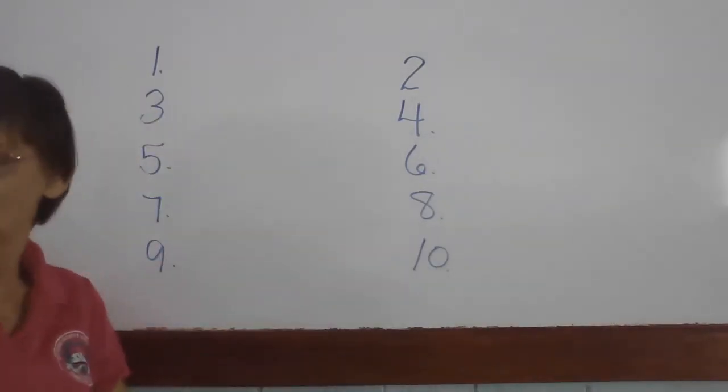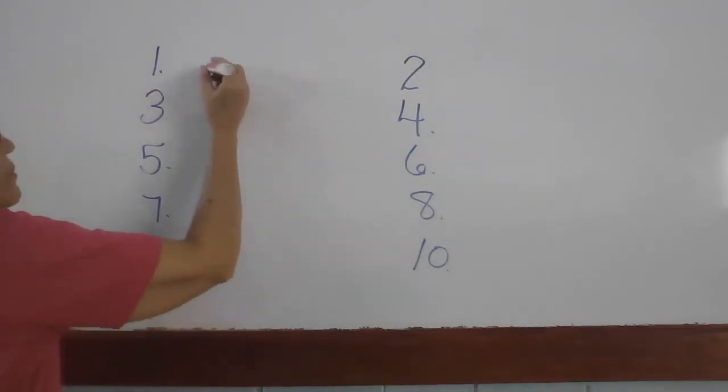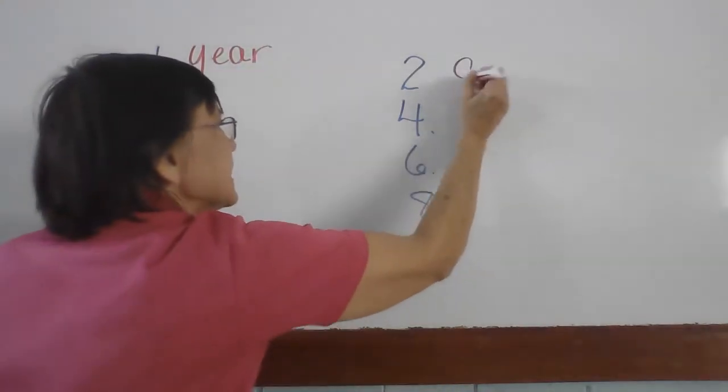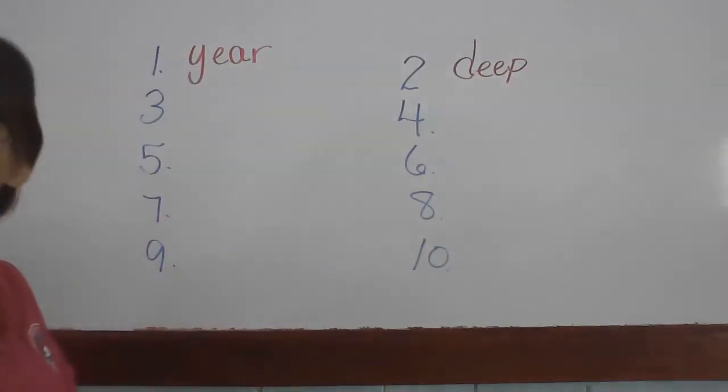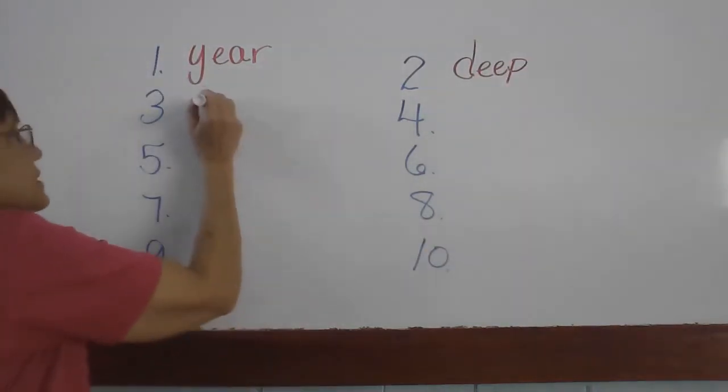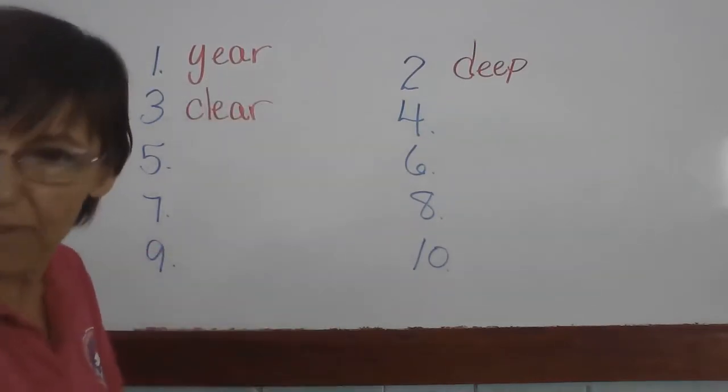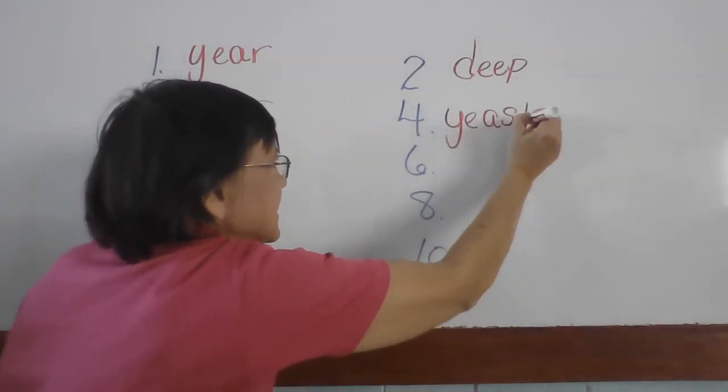Okay, so let's see how we did today. Number one is year. Y-E-A-R. Number two, deep. D-E-E-P. Number three, clear, C-L-E-A-R. Number four, yeast, Y-E-A-S-T.